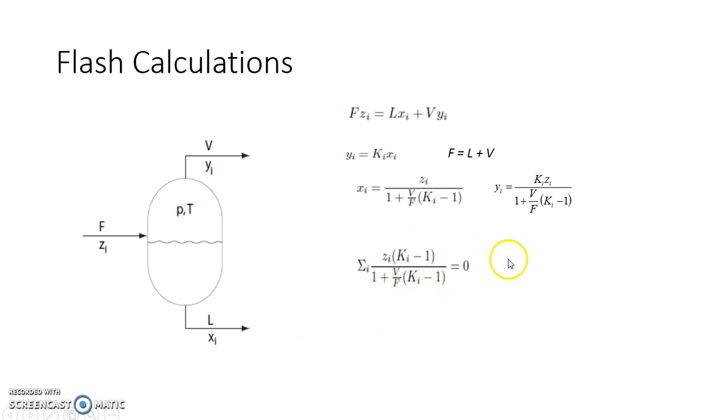To solve this equation, you can use DePriester chart, or if you have expressions for Pi sat or gamma, you can substitute them here. Given temperature and pressure, get Ki and solve this equation. However, use of DePriester chart is highly useful because it reduces the calculations. We are going to see one of the examples wherein how to use DePriester chart to solve this.